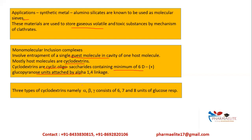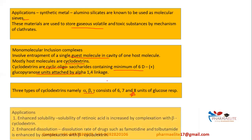The types or classes of cyclodextrins are alpha, beta, and gamma — three types. This is very important to remember: alpha contains six glucopyranose units, beta contains seven, and gamma contains eight. These are simple facts but questions on them definitely appear in exams, so you should not lose marks on such easy questions.